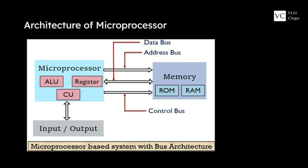Memory comes in two types: read-only memory (ROM) and random access memory (RAM). Programs that are permanently stored and executed every time the microprocessor wakes up or turns on are stored in ROM — these unmodifiable programs remain there regardless of whether the processor is powered on or not. In RAM, we store the results of data processing operations — whatever output comes from the arithmetic and logical unit can be stored in RAM and fetched when needed for transfer to the respective I/O device.